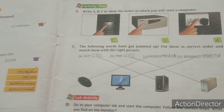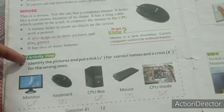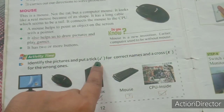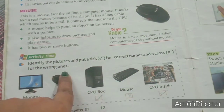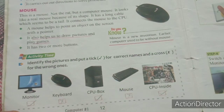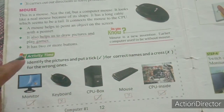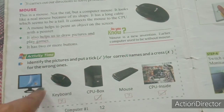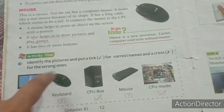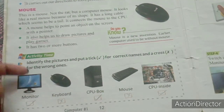Let's move on to page number 12. Here there is one activity time given. Let's read the question: identify the pictures and put a tick for correct names and a cross for wrong names. So you are given some pictures and their names below — if the names are correct you will tick, and if wrong you will put a cross. This you have to do by yourself.